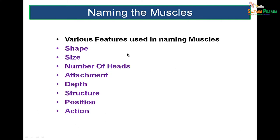How do we name muscles? Muscles have various names, some more complicated than others. There are certain features used to name muscles: according to their shape, their size, the number of heads they have, their attachment, how deep they lie, their structure, their position, and their action. Any of these features can be used to name a muscle.